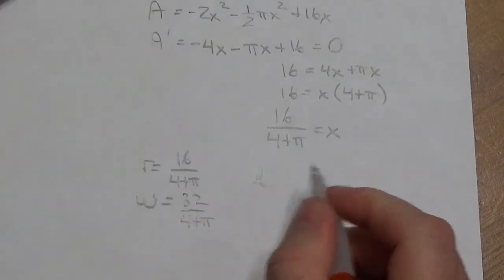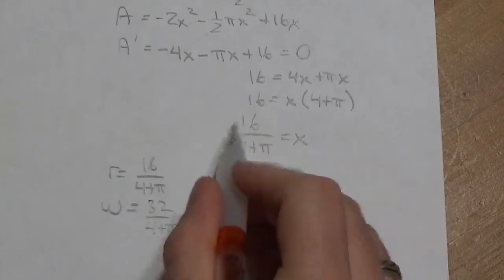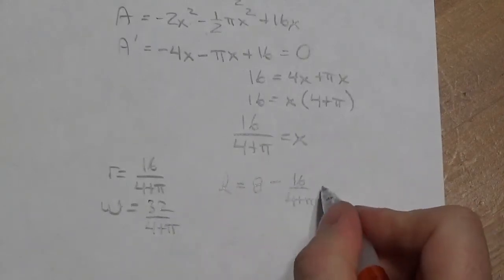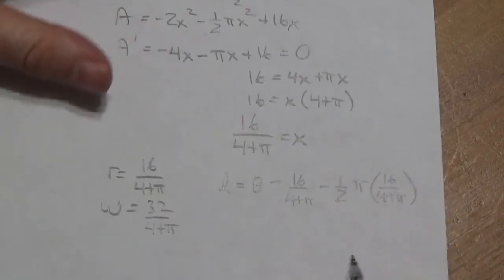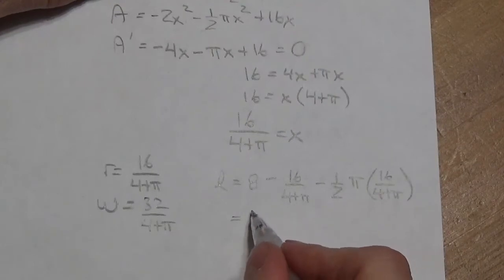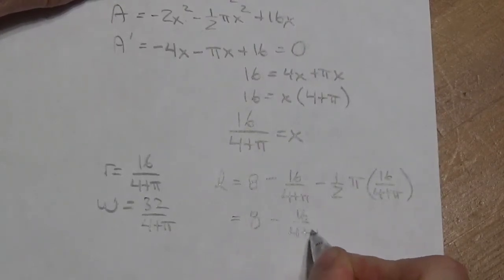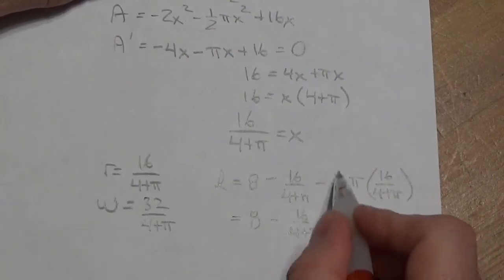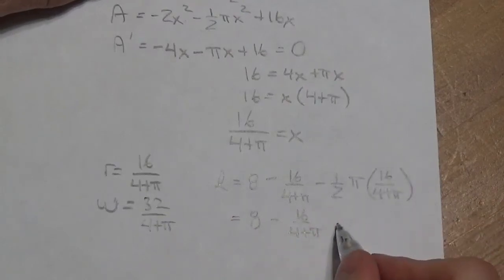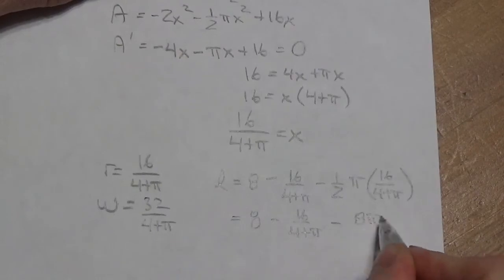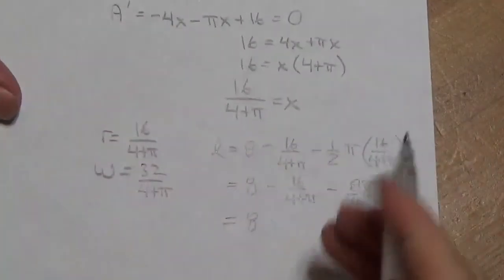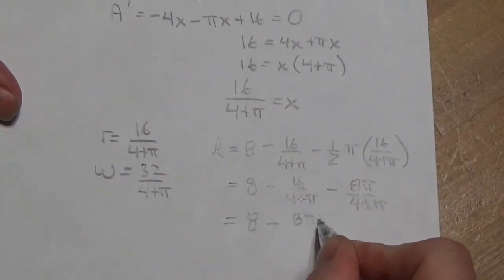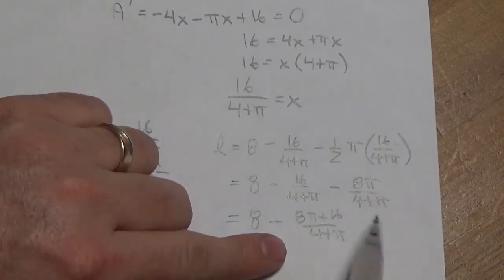Now, the length of the window, that was the y coordinate. That is going to equal 8 minus 16 over 4 plus π minus 1/2 π multiplied by 16 over 4 plus π. Okay? And so, let's see what we can do here. This is going to be 8 minus 16 over 4 plus π. When I distribute that 1/2 through this expression, it's going to be minus 8π over 4 plus π. Putting those together, I'm going to get 8 minus. This is going to be 8π plus 16 over 4 plus π. And I can do that because the denominators are both the same.